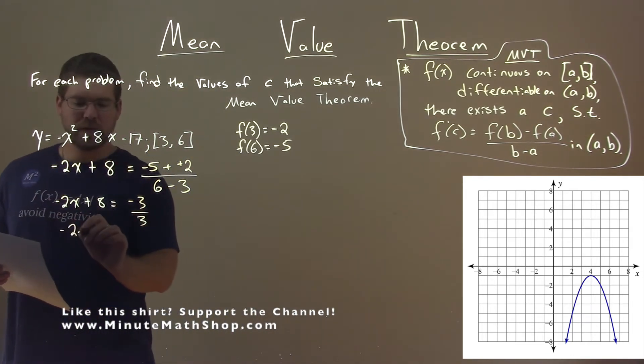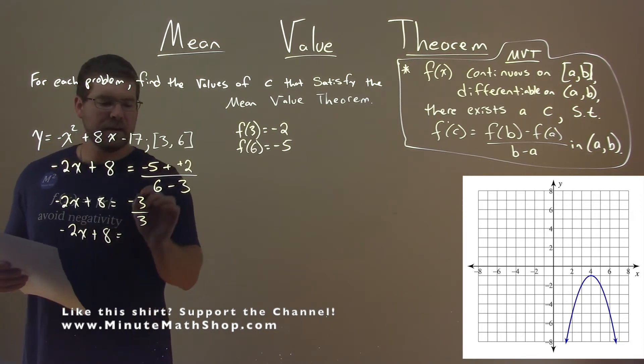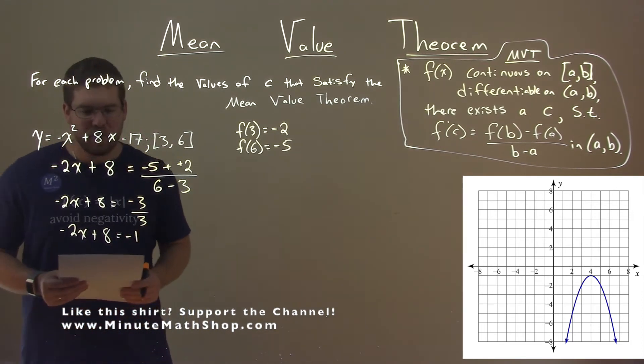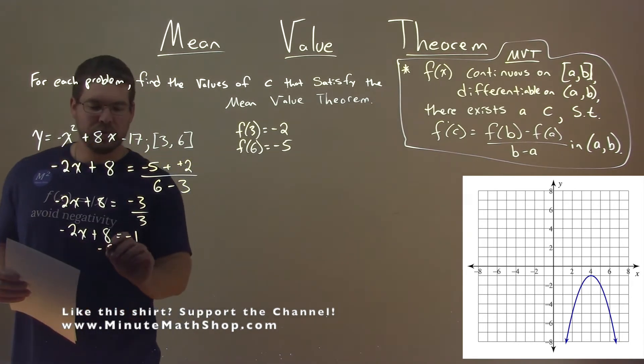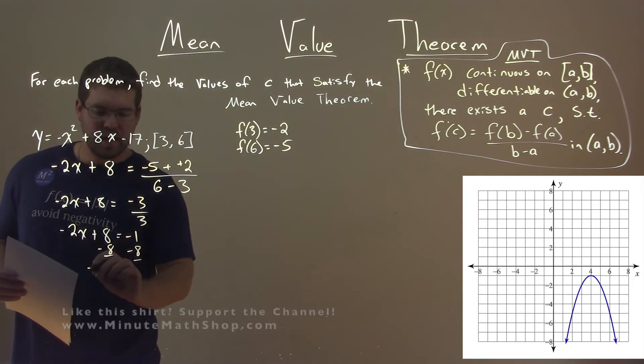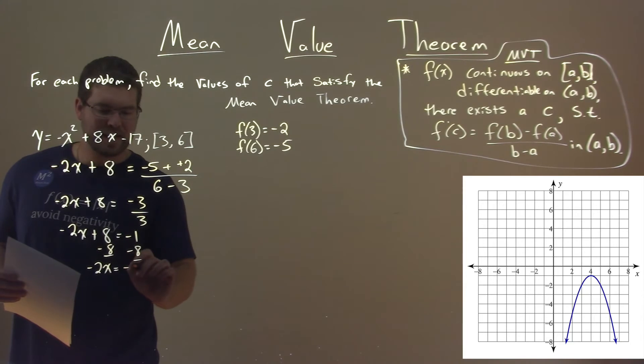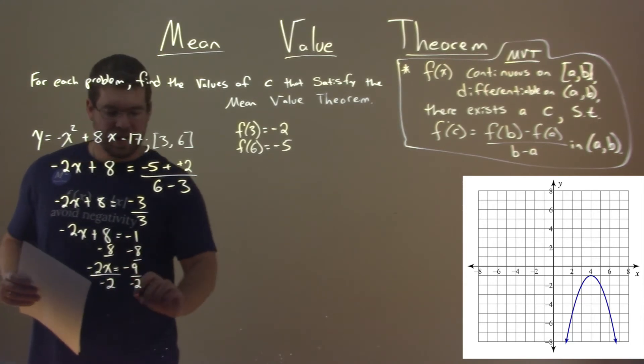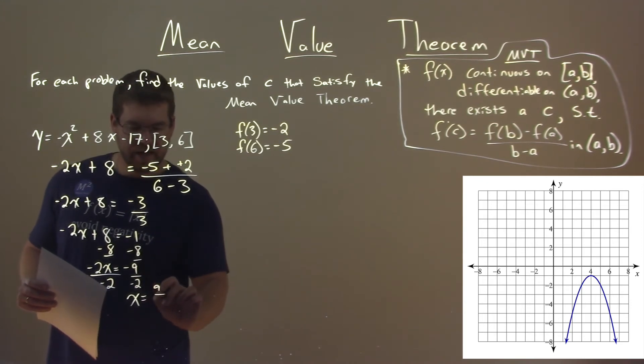So negative 2x plus 8 equals negative 3 over 3, which is negative 1, and we're solving for x. Subtracting 8 from both sides, negative 2x equals negative 9. Divide both sides by negative 2, and x equals positive 9 halves.